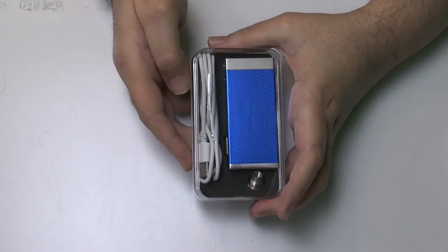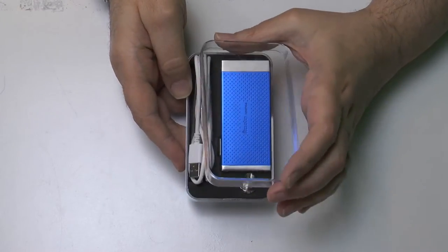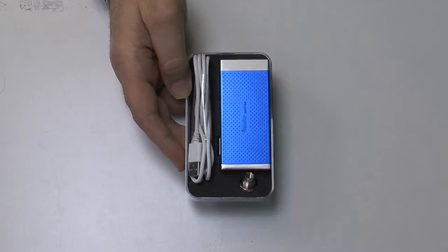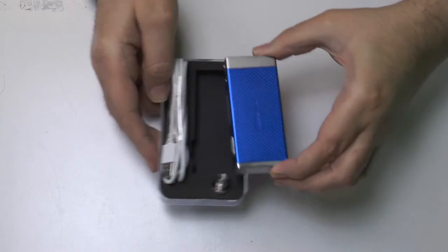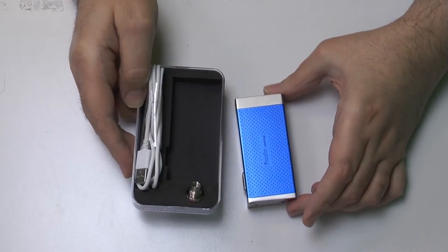And here we have the inside packaging, the plastic box, normally sealed but I have been using this for a few days. And in here you have your MVP, MVP3.